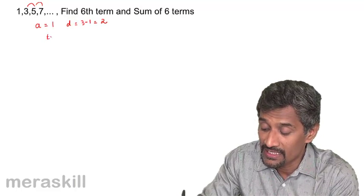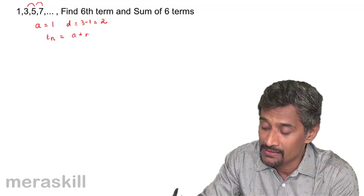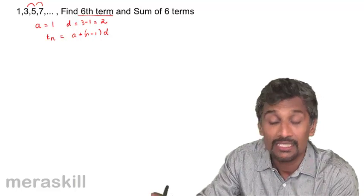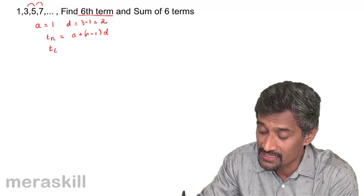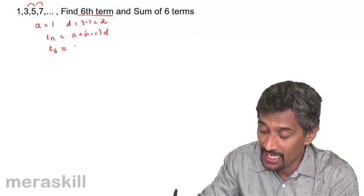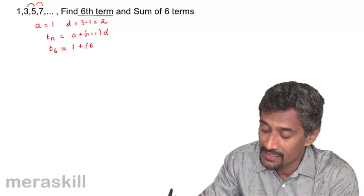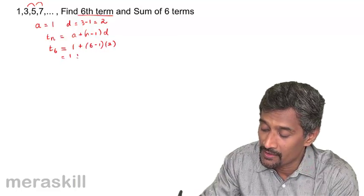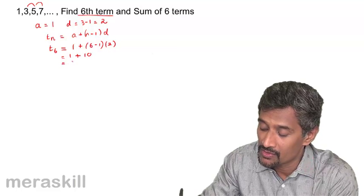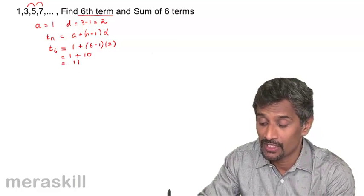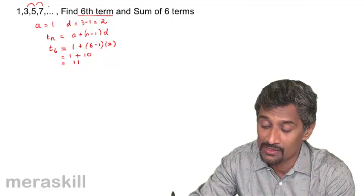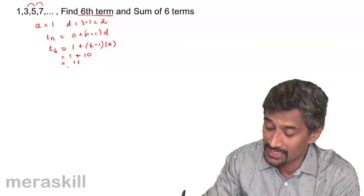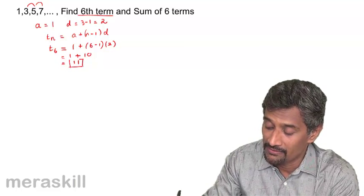We use the formula tn = a + (n-1)d. The question asks for the sixth term, so t6 = 1 + (6-1) × 2 = 1 + 5 × 2 = 1 + 10 = 11. You can verify: after 7 comes 9, then 11 — so the sixth term is 11.